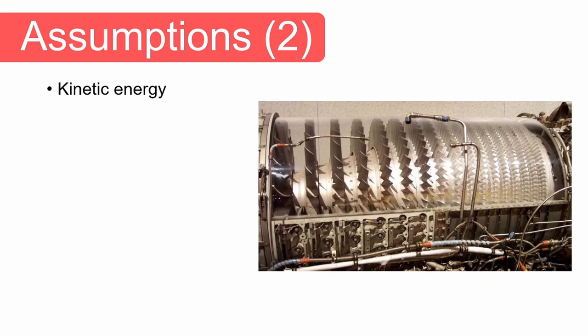Also, our problem does not give us any data with which we can calculate kinetic energy — neither of the air entering nor of the air leaving the compressor. You will also note that the inlet and outlet of the compressor are at the same elevation, and therefore potential energy will not change and we do not take it into consideration. Lastly, the rate of heat loss or gain will be much smaller than the rate at which energy flows through the system, and we usually assume that compressors and turbines are adiabatic, meaning they do not exchange heat with the surroundings.